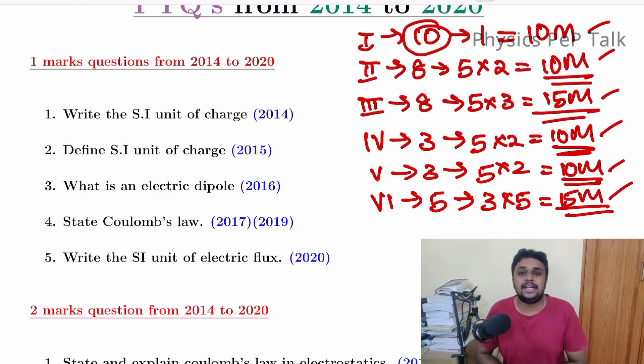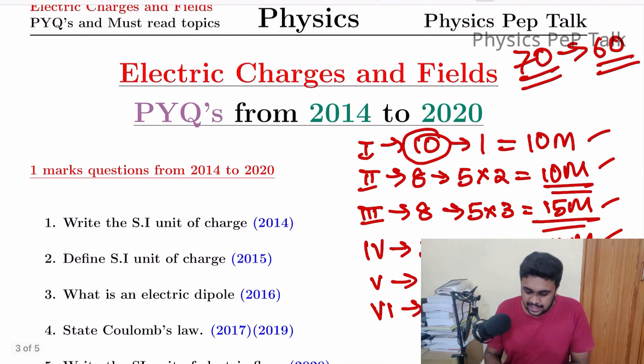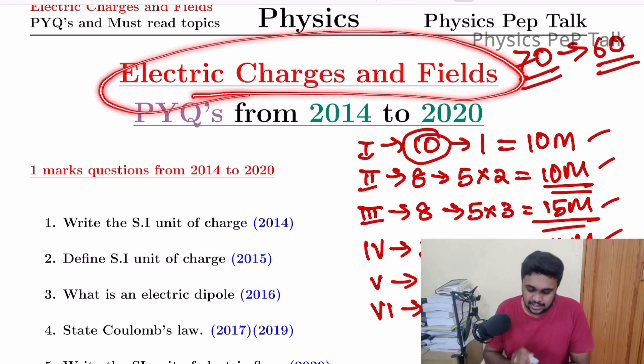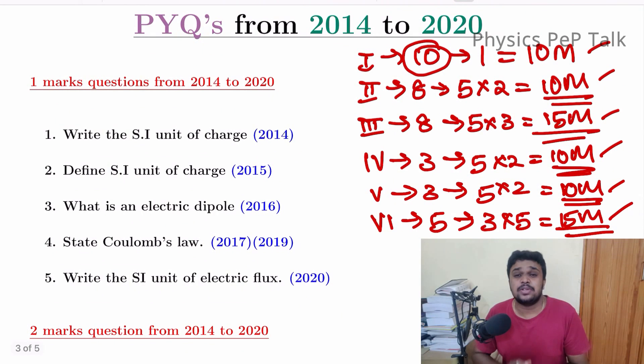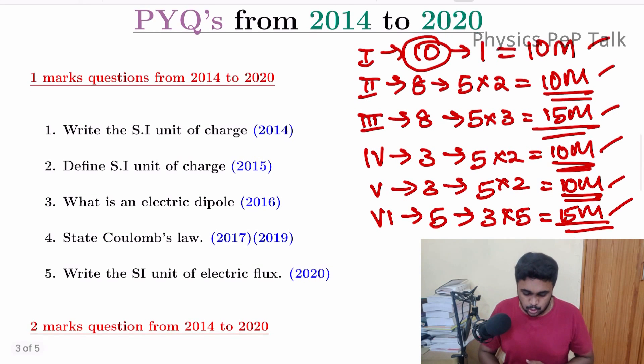In this main, you have to check the ability to predict questions. So this is the first chapter, that is Electric Charges and Fields. We have to discuss important questions. We have the solution from Oswald Books. We will share the same PDF. You can join our Telegram channel where I will update the PDFs as early as possible. Within 1 day, we will upload the PDFs. So don't subscribe to our Telegram channel and subscribe to our channel.